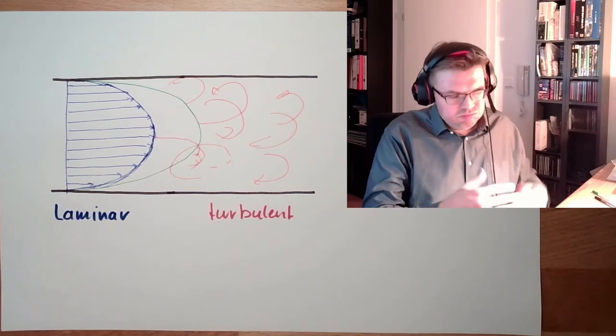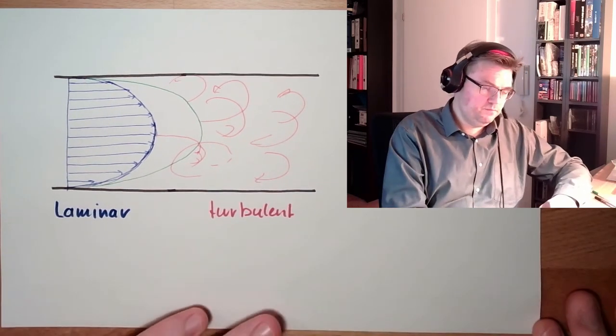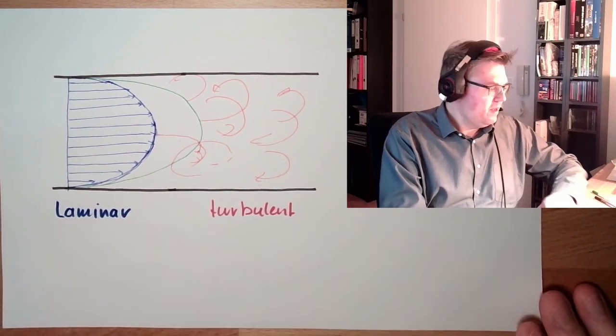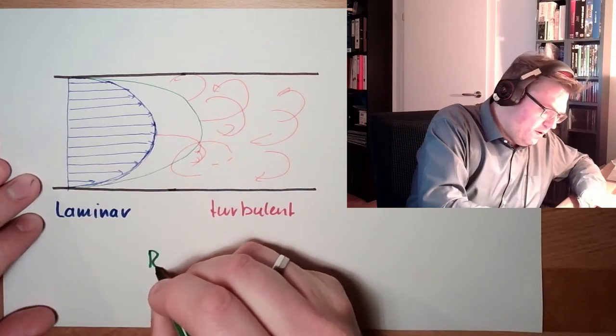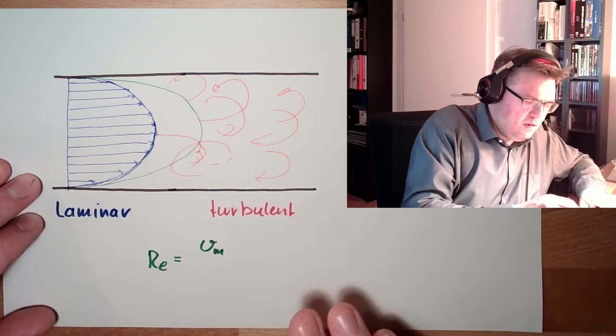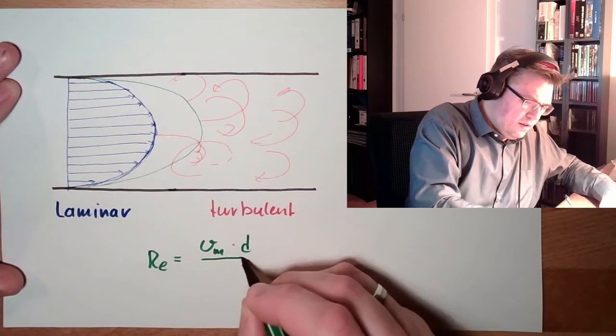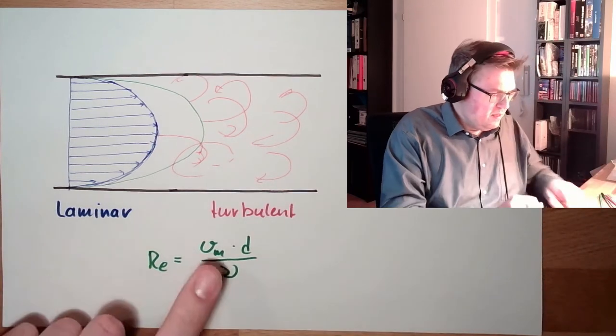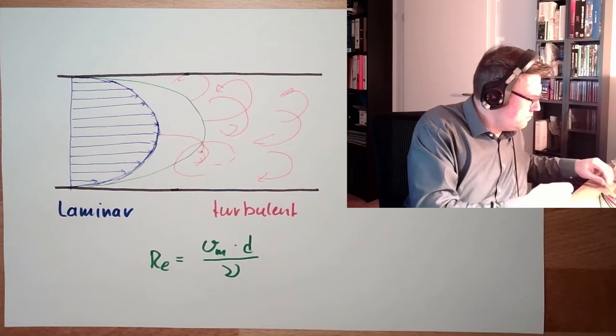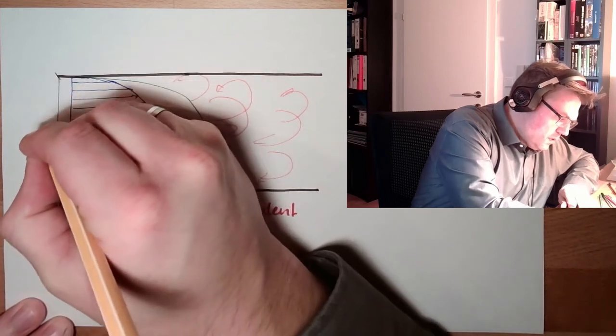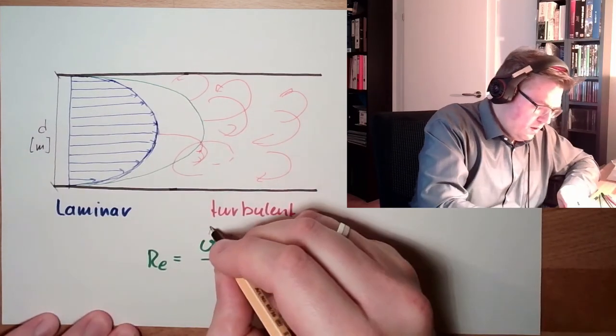How can we now guess or know which type of flow I am going to have in my tube? The so-called Reynolds number is helping us. Reynolds number, Re, is calculated by the mean velocity. So not some highest velocity, but the middle velocity. Multiplied by d divided by nu. What are the things? Like I said, this is the middle velocity. So this is which velocity I have. D is the diameter. The diameter of the tube. This is measured in meters, of course. The middle velocity, this is measured in meters per second.